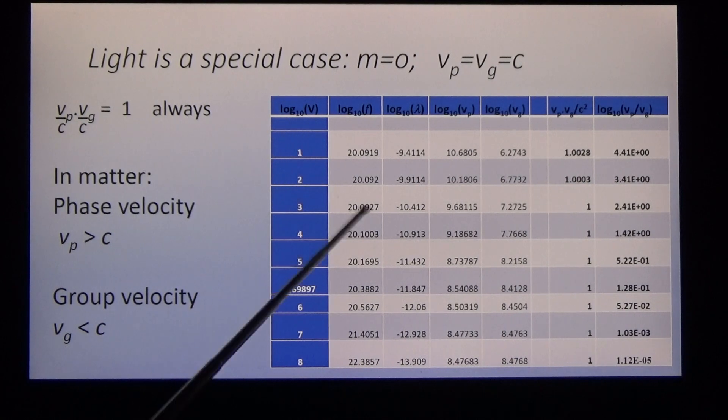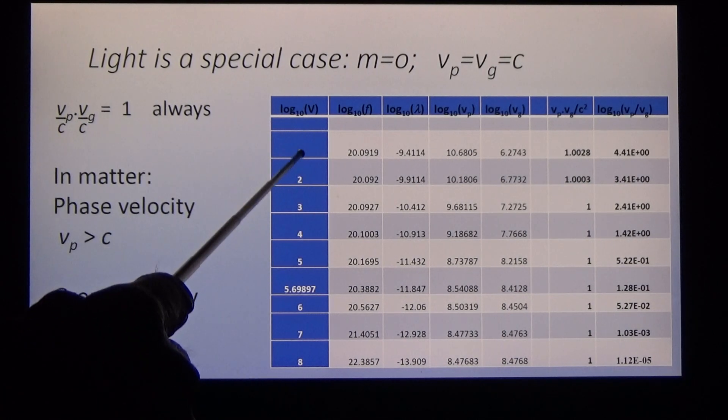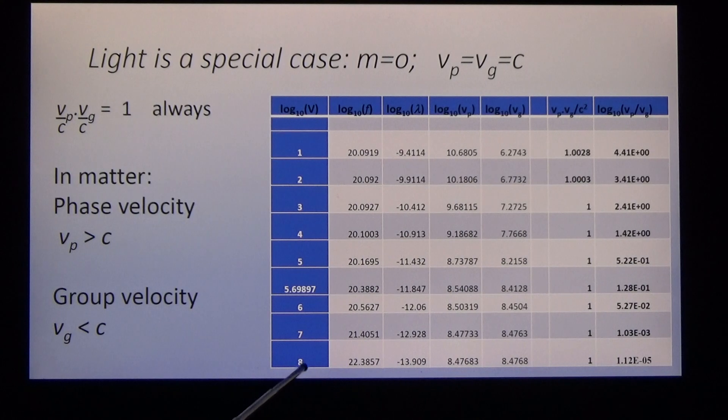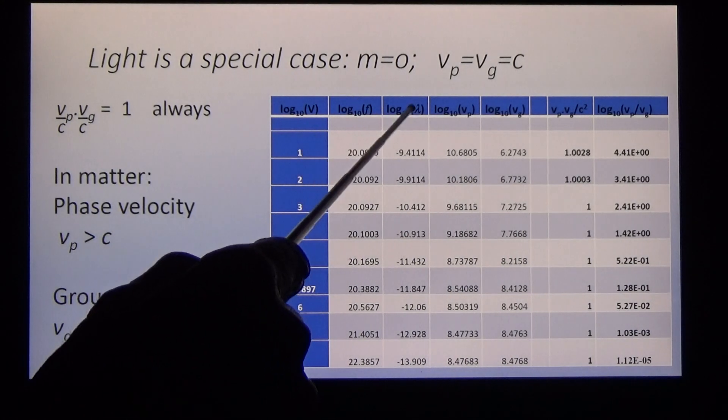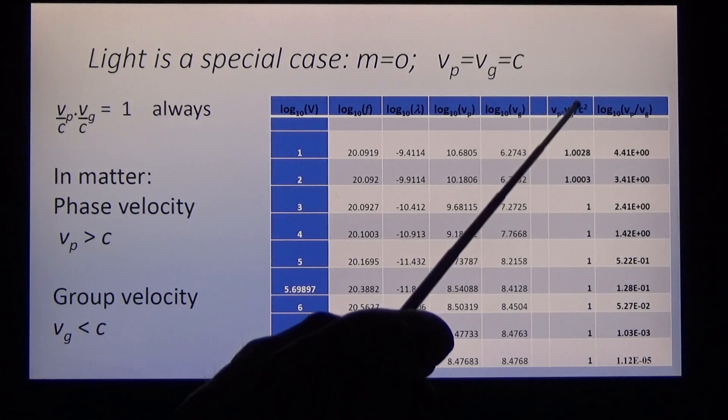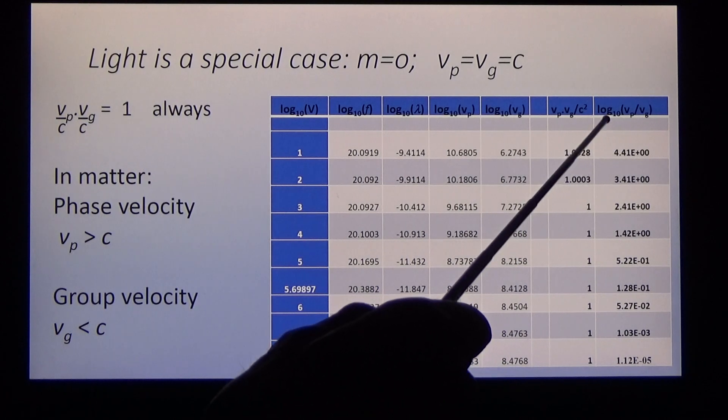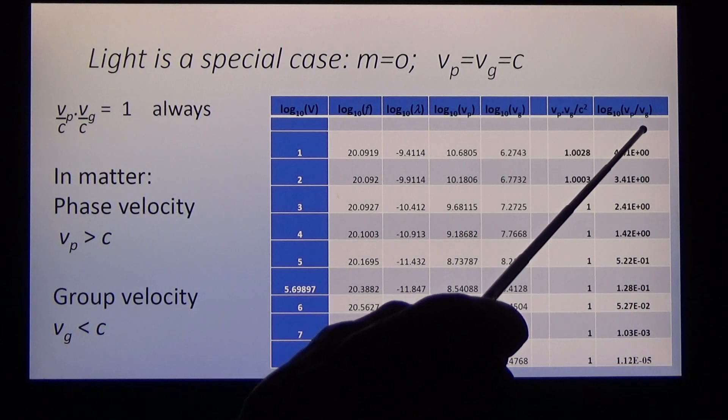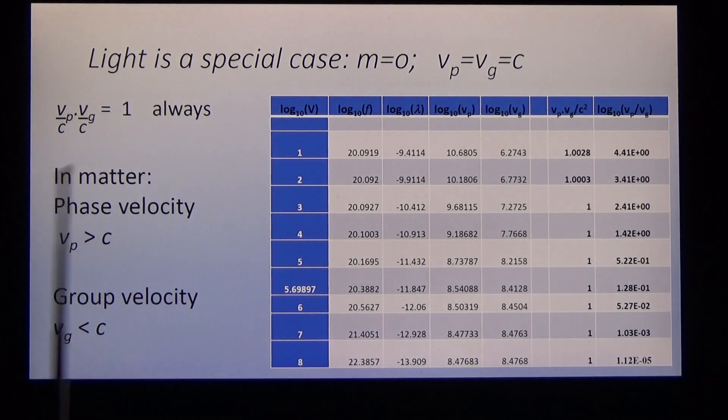This is a logarithmic tabulation: energy of the probe, 10 volts to 100 million volts. And calculated frequency, wavelength, phase velocity, group velocity, product, and the ratio of phase velocity divided by group velocity. What do we find? V, the product of the phase velocity and the group velocity, is always equal to 1. In matter, the phase velocity is greater than c, the group velocity is less than c, as in relativity.